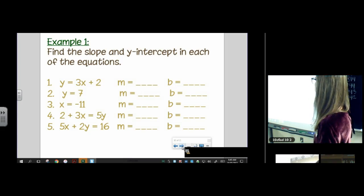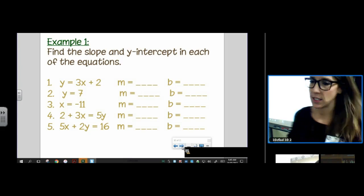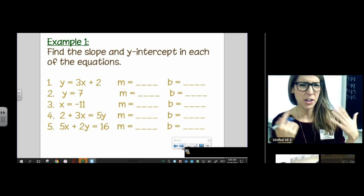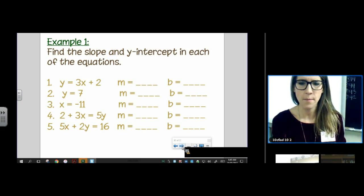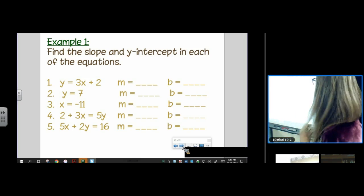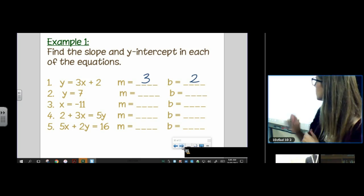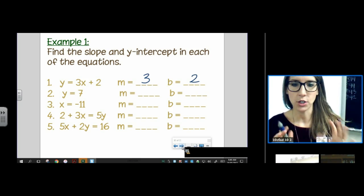Alright, so let's try a few examples. We're going to, well, I'm going to do this very quickly because this is a review. You pretty much already did this when you did the slope lesson, okay? So take a look at these. What's the slope? Three. What's the y-intercept? Two.